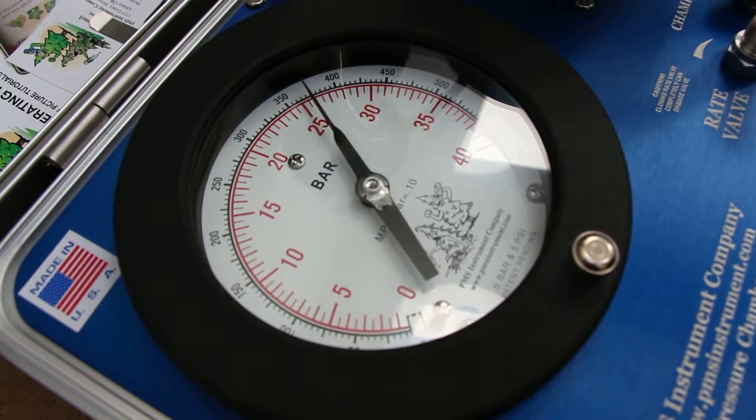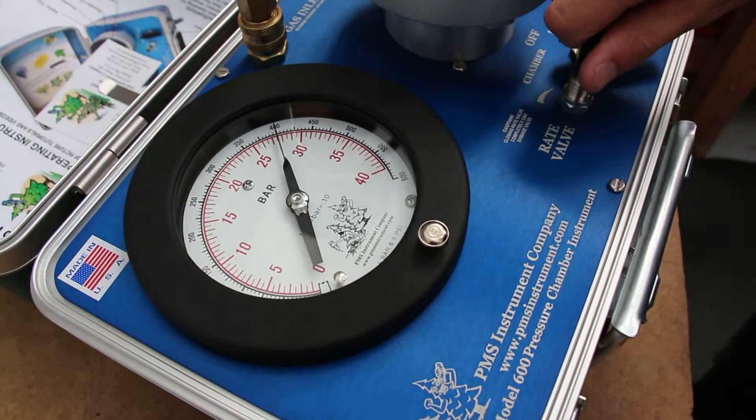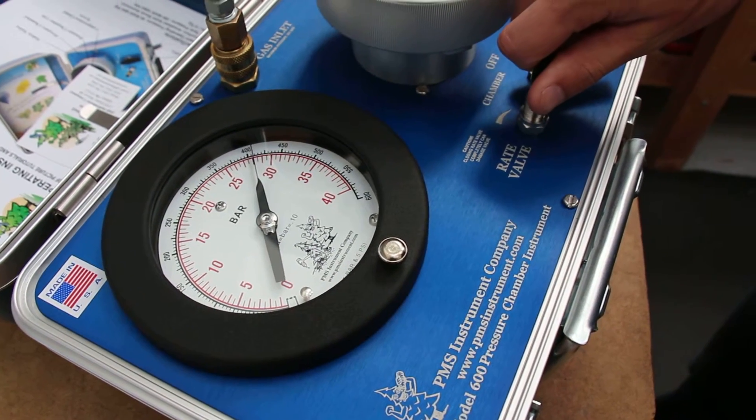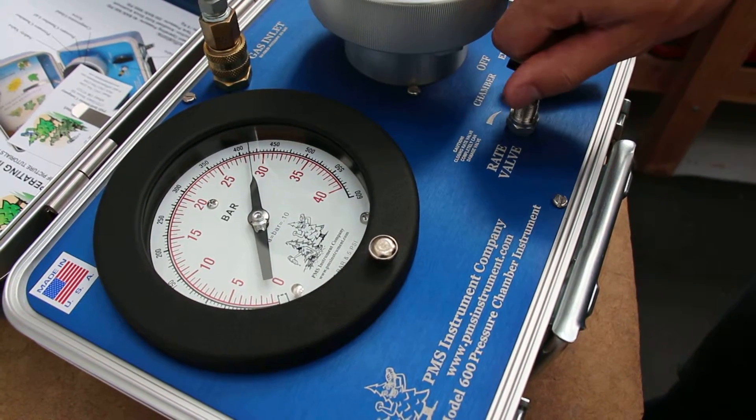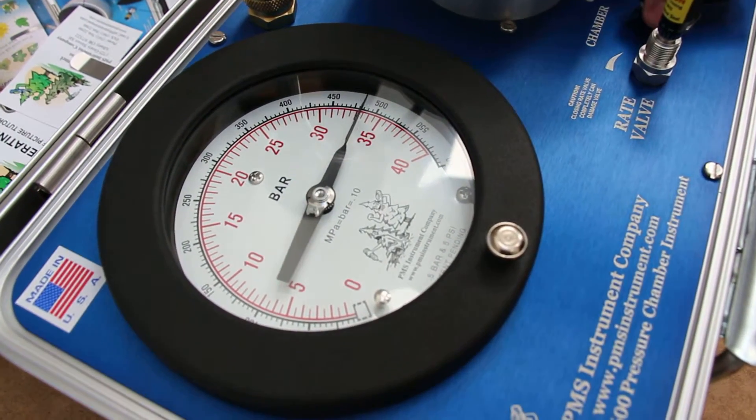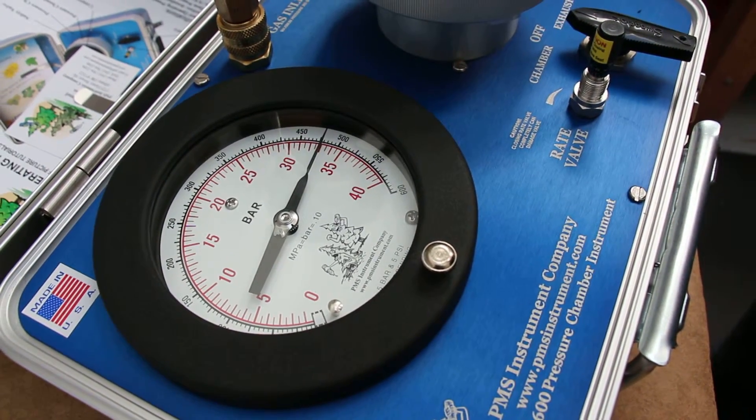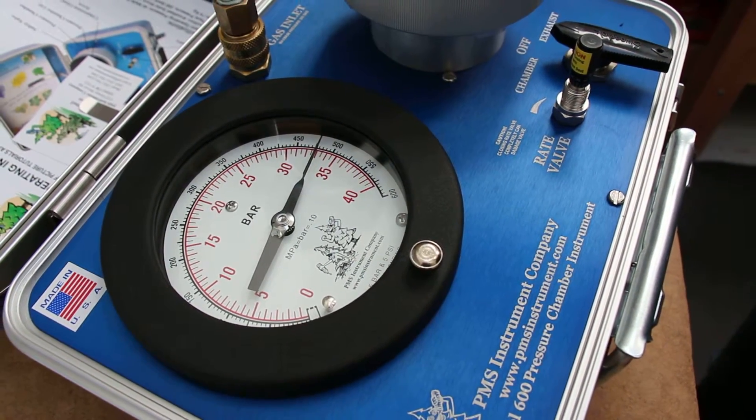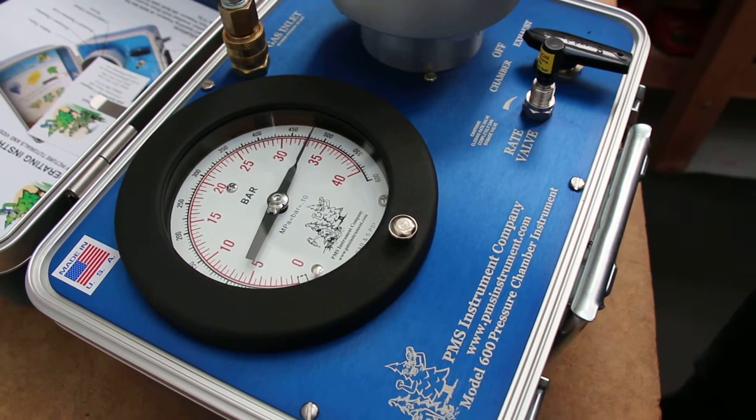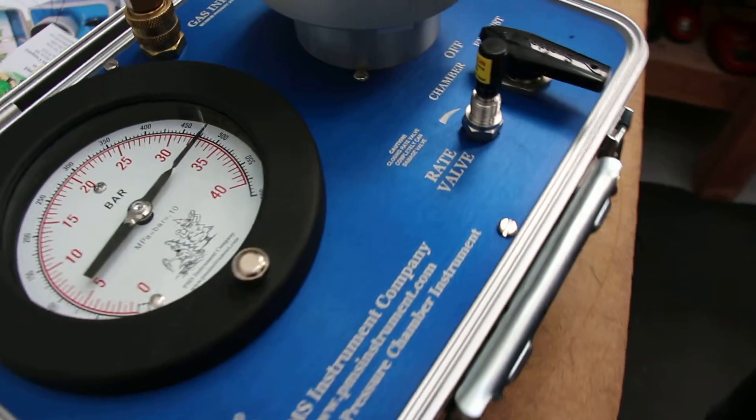The rate valve can be tightened further if necessary, or opened up to reach a higher pressure zone. You can open the rate valve to achieve that higher pressure before slowing it down to about half a bar per second.